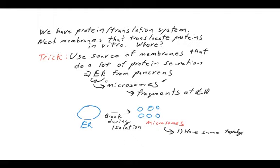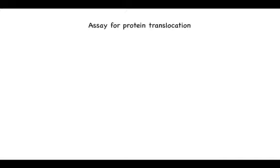What's important about those microsomes is that they have the same topology as the ER, that the inside of the ER stays the inside after the ER fragments. What people found is that when you set up one of these in vitro translocation systems, if you set it up, they are highly competent for proteins to move across the membrane and accumulate inside the microsome.